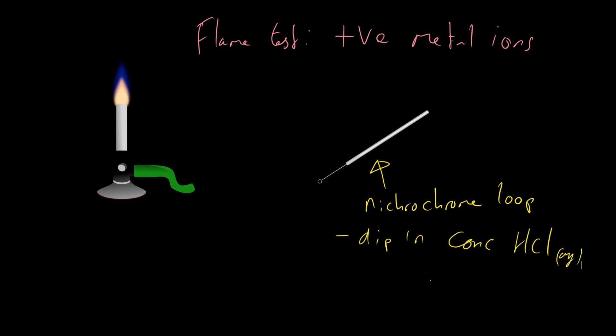After we have dipped again, we then dip into the metal compound because normally our metal ions are going to be aqueous—they're going to be dissolved. This isn't a test for solid metal, this is a test for metal ions.